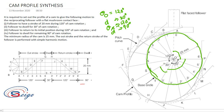Next, divide this 120-degree out-stroke into six equal divisions, because you have also divided the 120 degrees in the displacement diagram into six divisions. Dividing the base circle into six equal divisions for the theta out-stroke, naming the points one, two, three, four, five, and six.